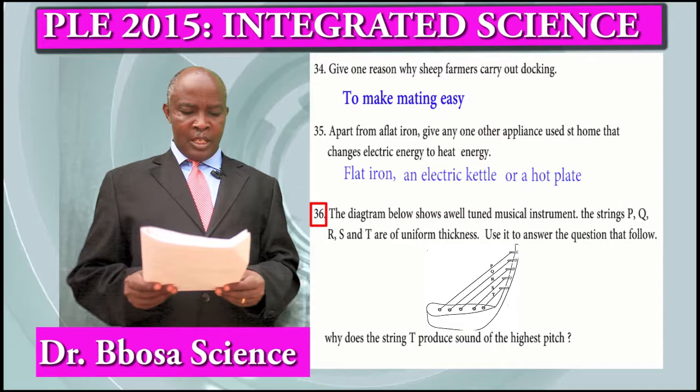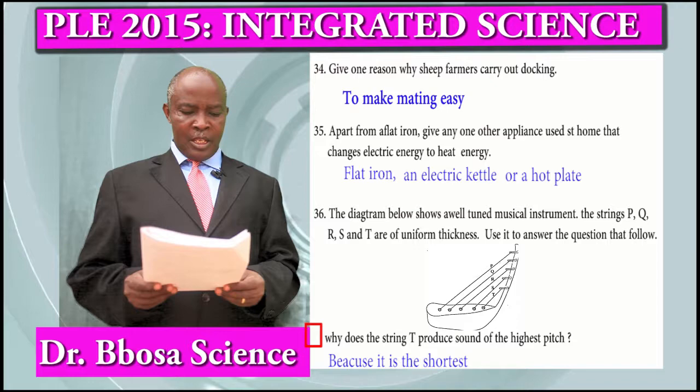Question 36: The diagram below shows a stringed musical instrument. The strings P, Q, R, S, and T are of uniform thickness. Why does string T produce sound of the highest pitch? Because it is the shortest.